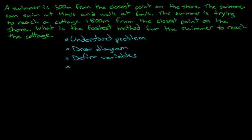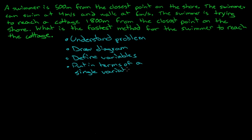Once we define the swim distance and the walking distance, we need to put them in terms of a single variable. These optimization problems are really just applied maximum and minimum — we're just trying to find the maximum and minimum points of slopes. And if we can make a function that does that, then the question is quite simple.